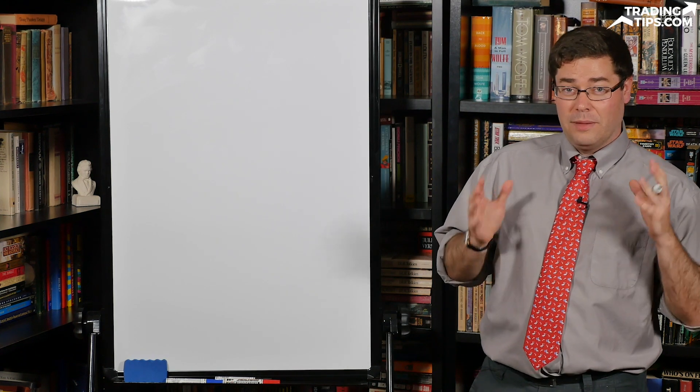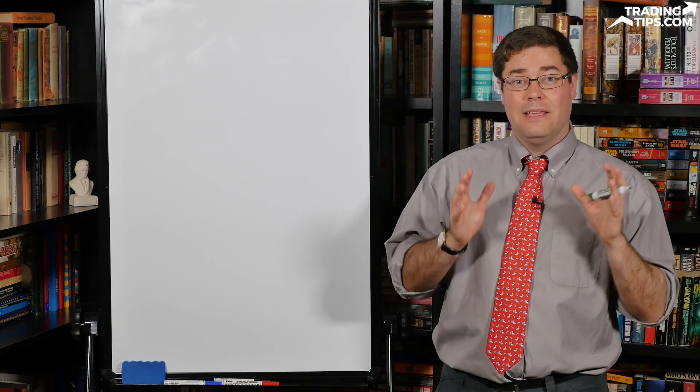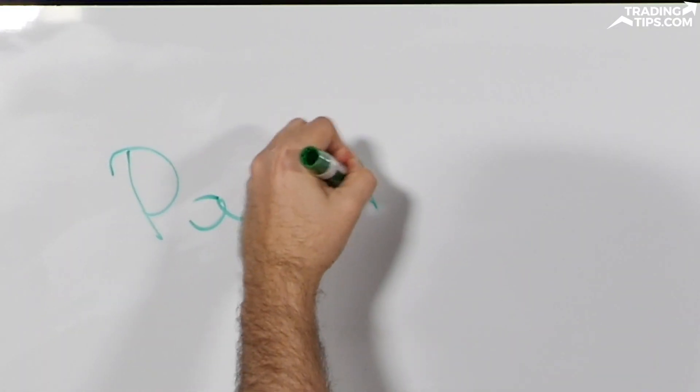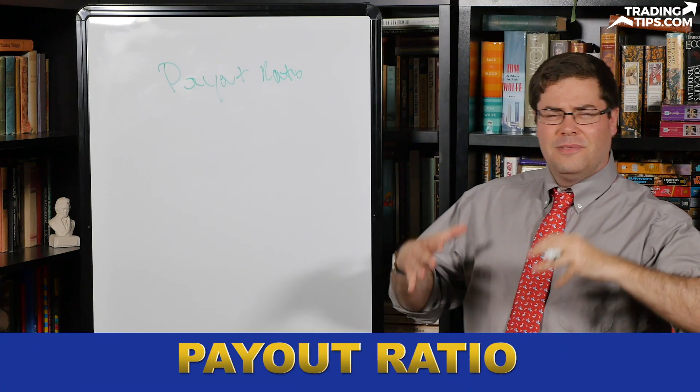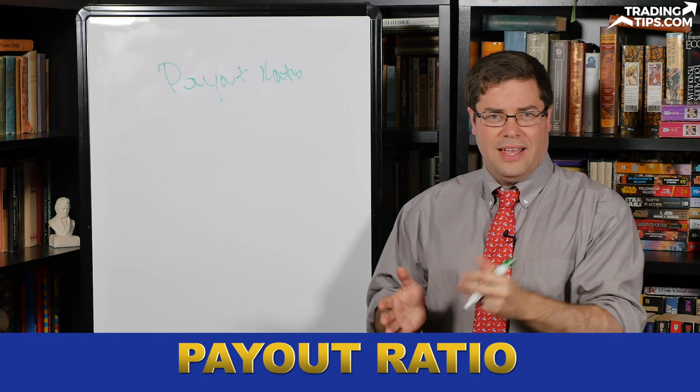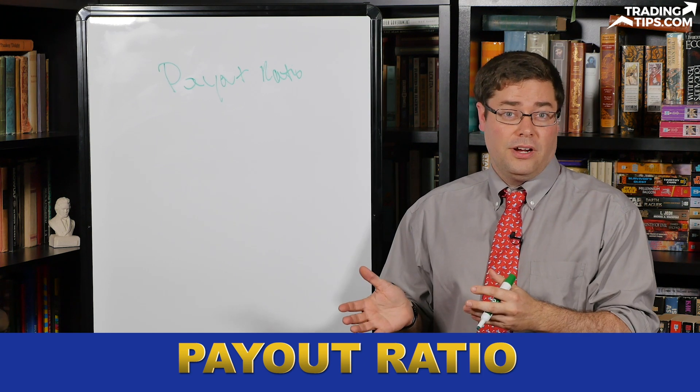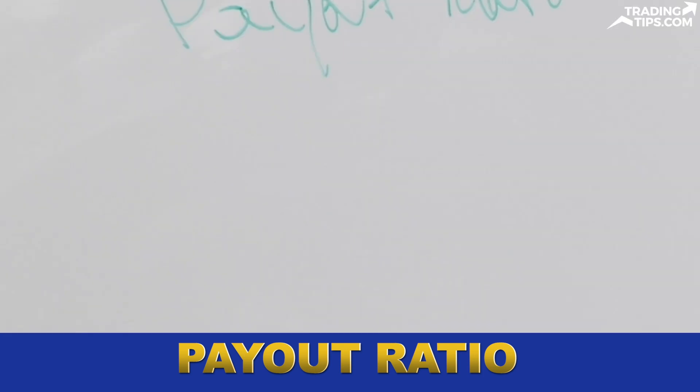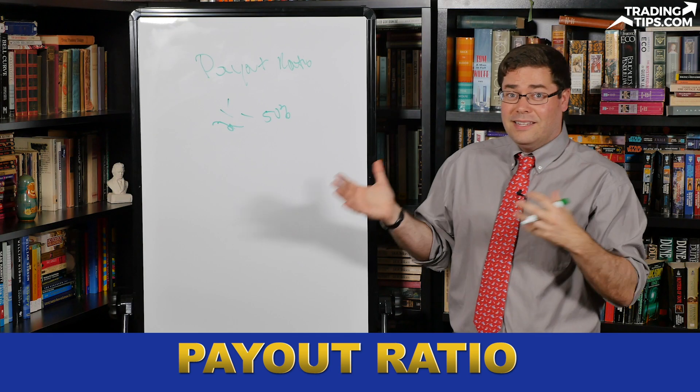The first thing that I like to look for when I'm screening for a dividend investment is the payout ratio. The payout ratio tells us how much a company earns and how much is going out in the dividend. So if a company earns $2 per share and it pays out a dollar a share in the dividend, its payout ratio is one over two or 50%. So that's a good sign.